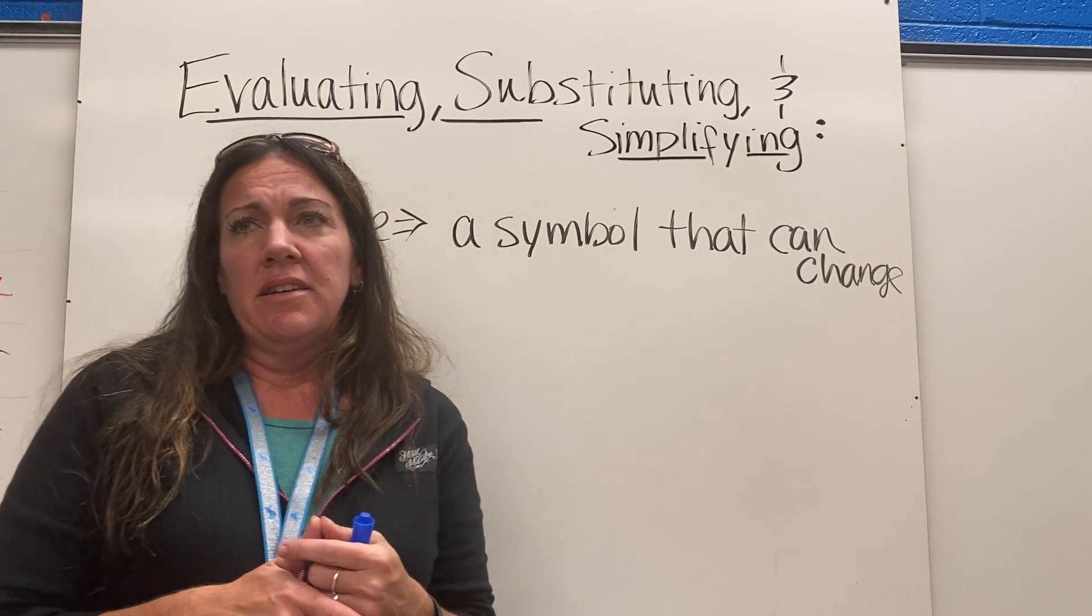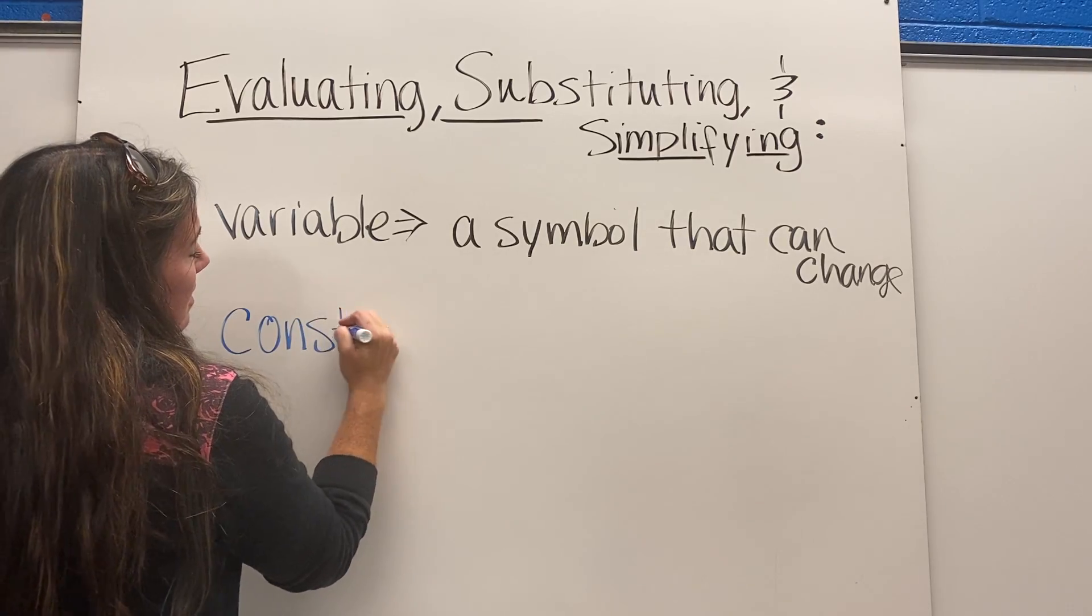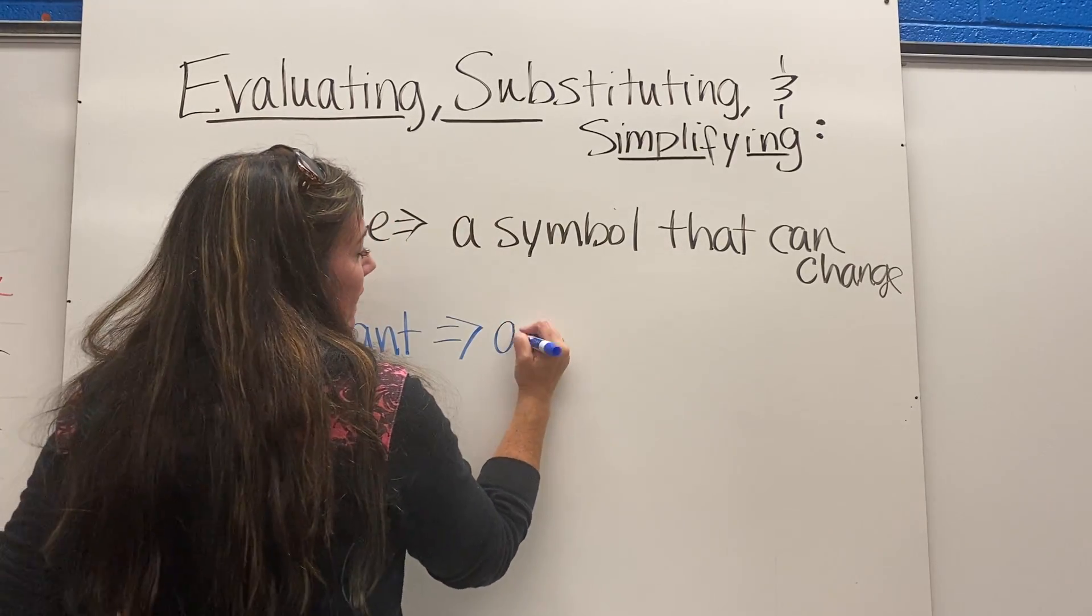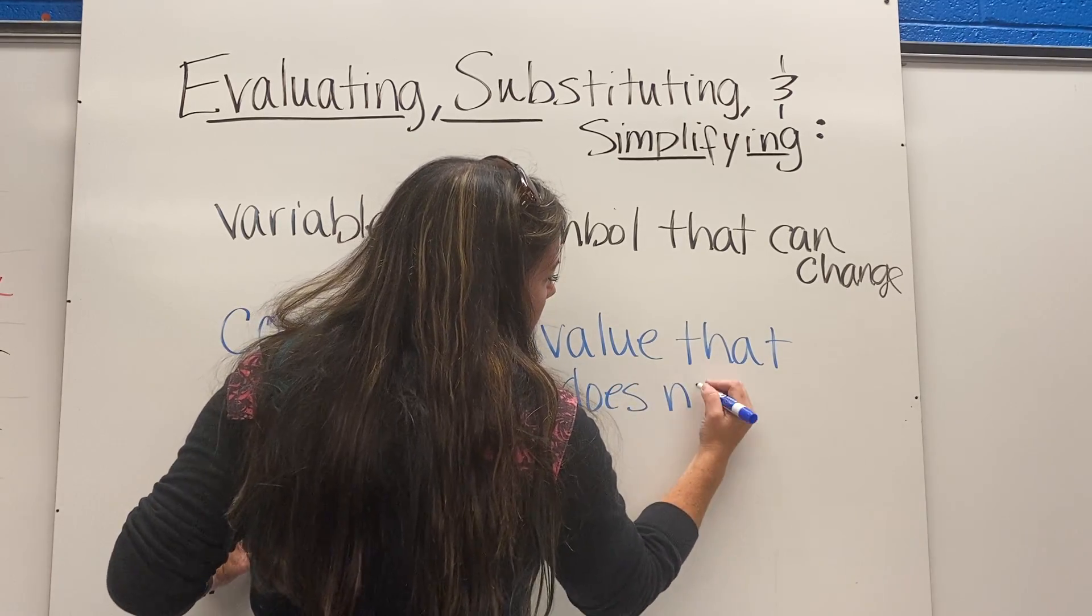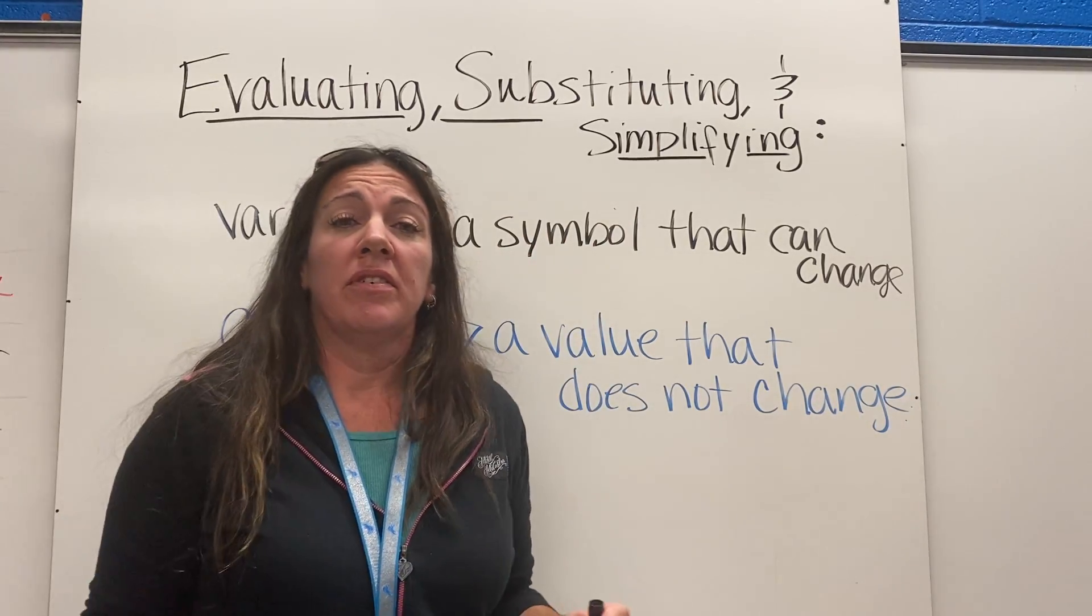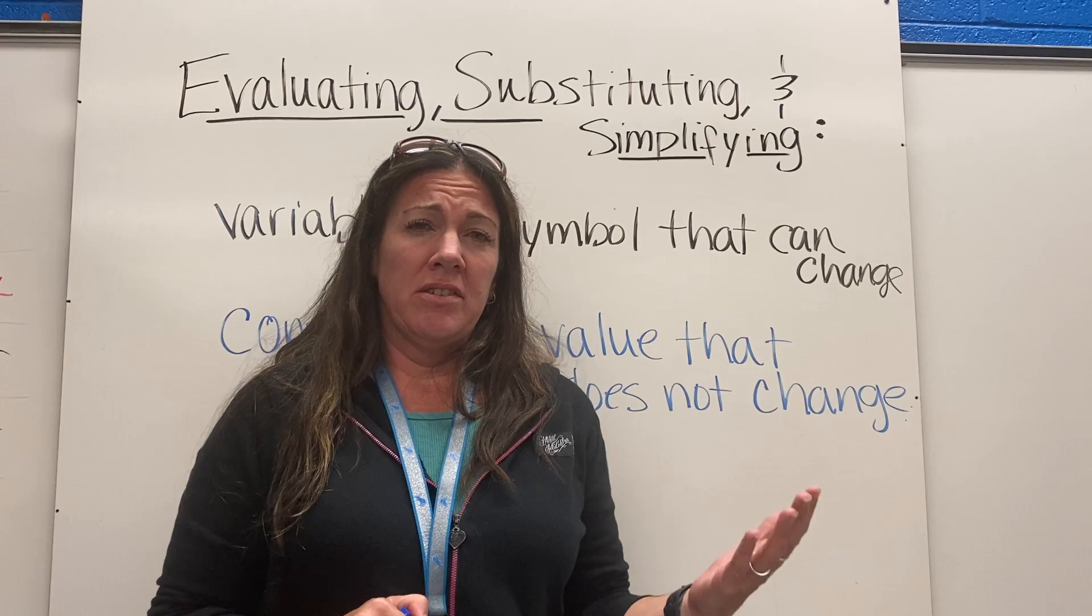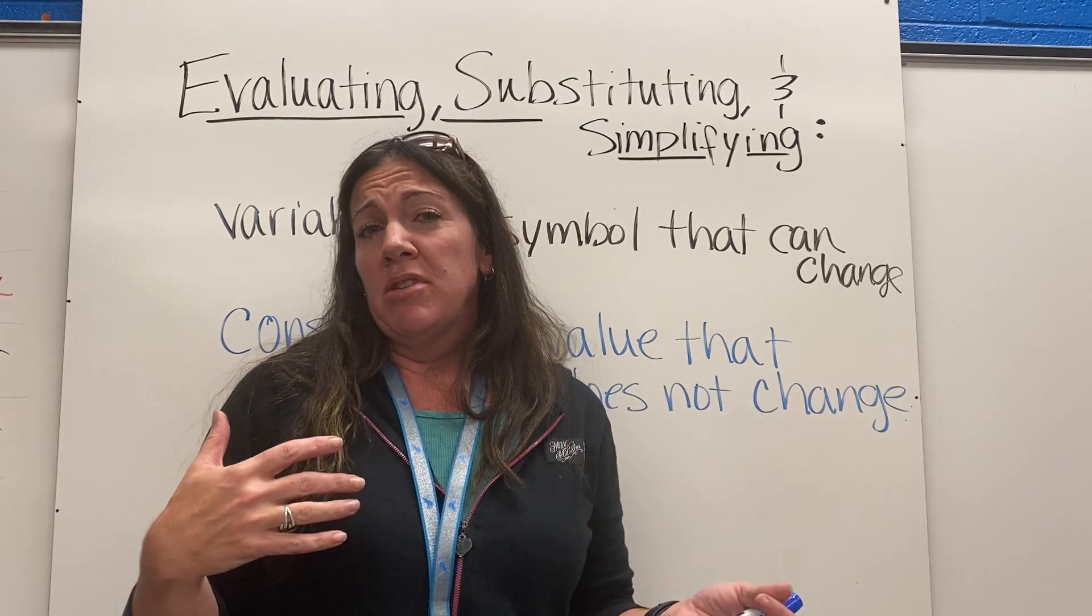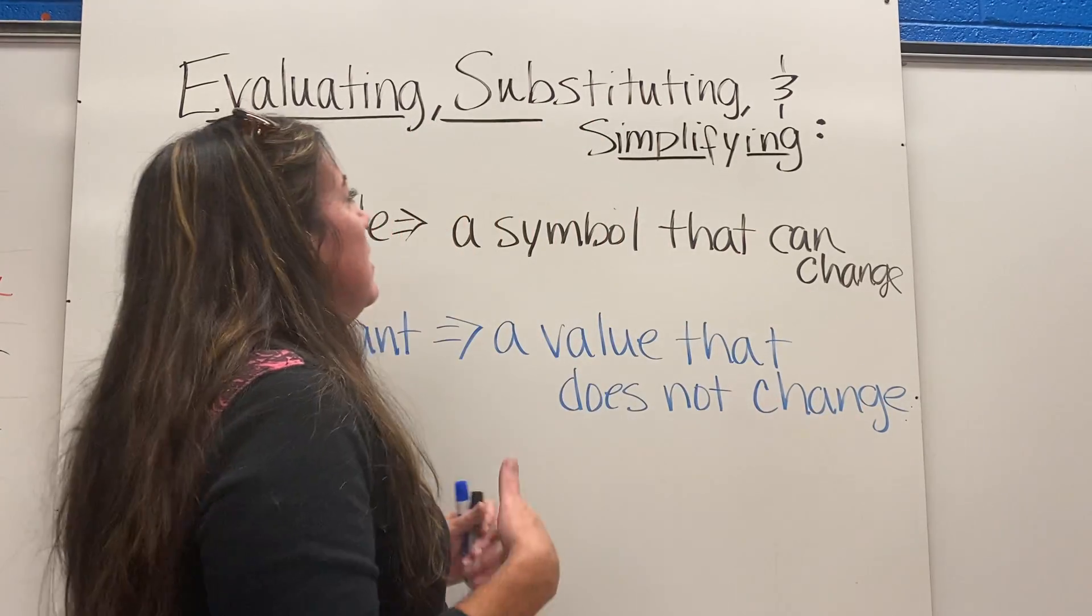What is a constant? If a variable is a symbol that can change, a constant is a value that does not change. If you think about five, five is always five. When you look at five, if it's five cars it's the same amount as five boats. Regular numbers don't change. Negative 2 is always going to be negative 2.